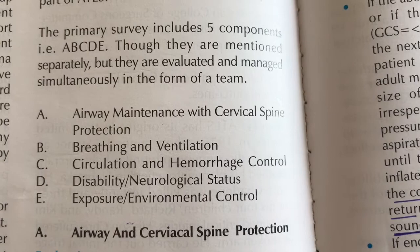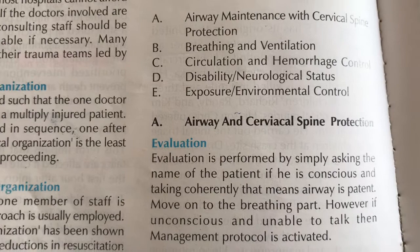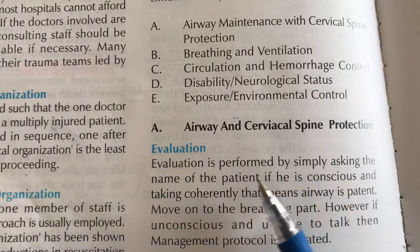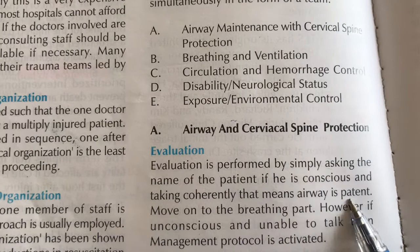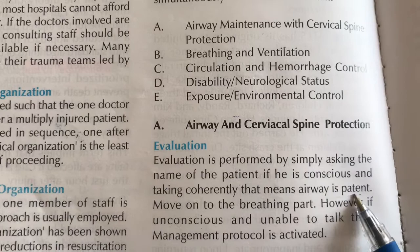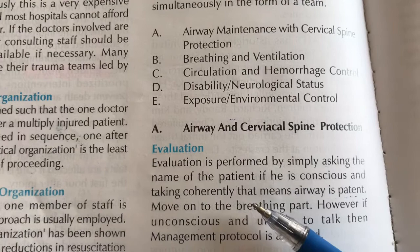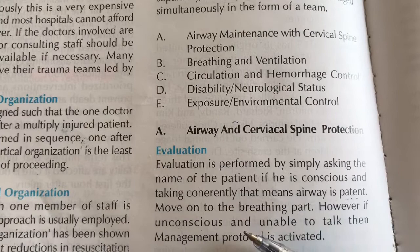First, we move towards airway and airway maintenance with cervical spine protection. We evaluate whether our patient is conscious or not, and whether speech is coherent. Evaluation is performed by simply asking the patient's name. If the patient is conscious and talking coherently, that means the airway is patent. We can then confirm airway patency and normal breathing, and move on to the B part.